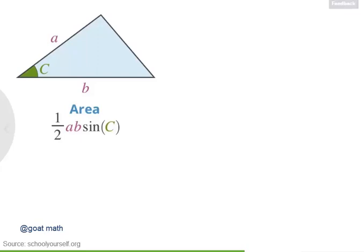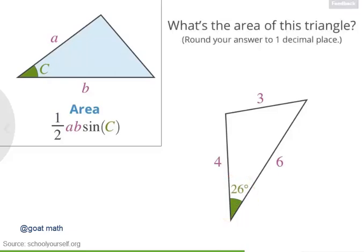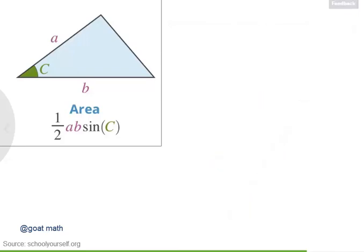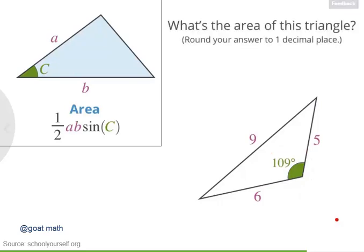Let's finish this lesson off with some numerical examples. Take a look at this triangle here. Suppose its sides have lengths 3, 4, and 6, and that the measure of this angle down here is 26 degrees. What's the area of this triangle? Be sure to round your answer to 1 decimal place, and feel free to use the calculator down here. Great work! Now this formula works for any triangle, no matter its shape or size. So for your final challenge, take a look at this triangle, whose sides have lengths 5, 6, and 9, and suppose this obtuse angle here is 109 degrees. What's the area of this triangle? And don't worry, you can use the calculator to evaluate the sine of 109 degrees.